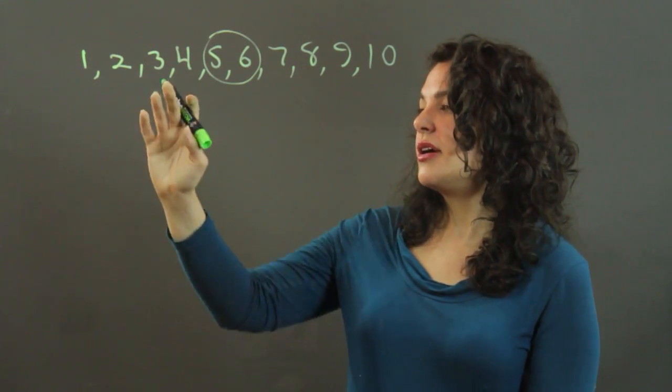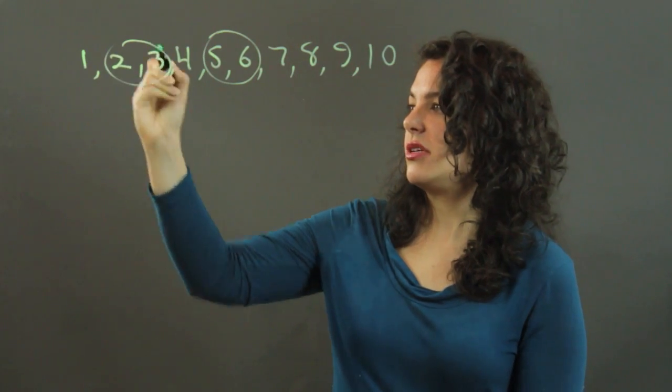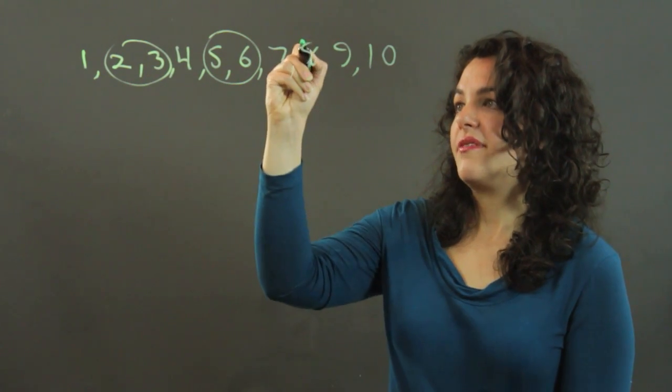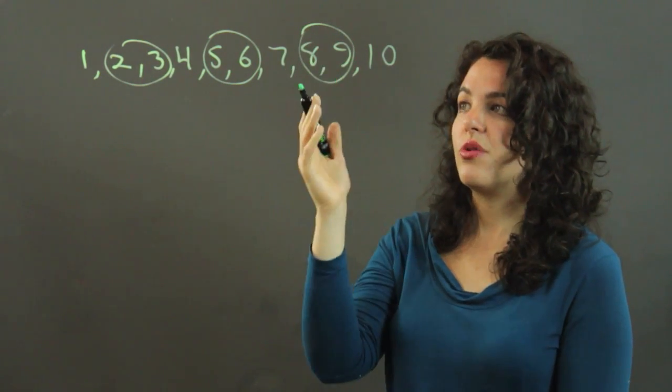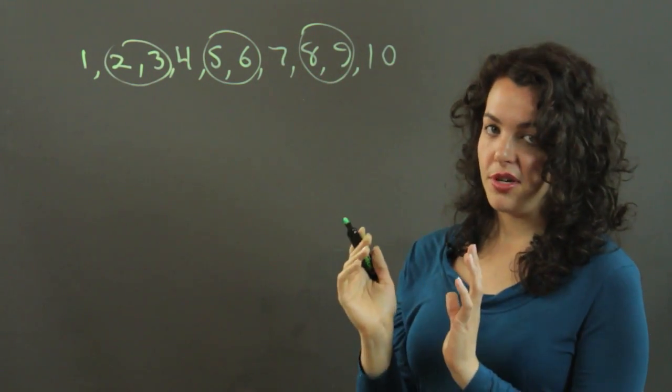And then, likewise, in the lower quartile, we don't have a number in the middle, so we have to average the middle two. And again, in our upper quartile, we have to average the middle two because we don't have a number that falls right in the middle. If we did, that would be our quartile.